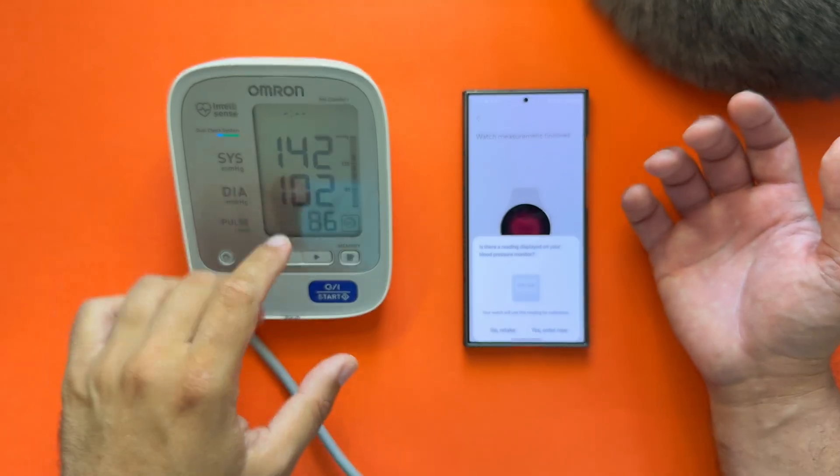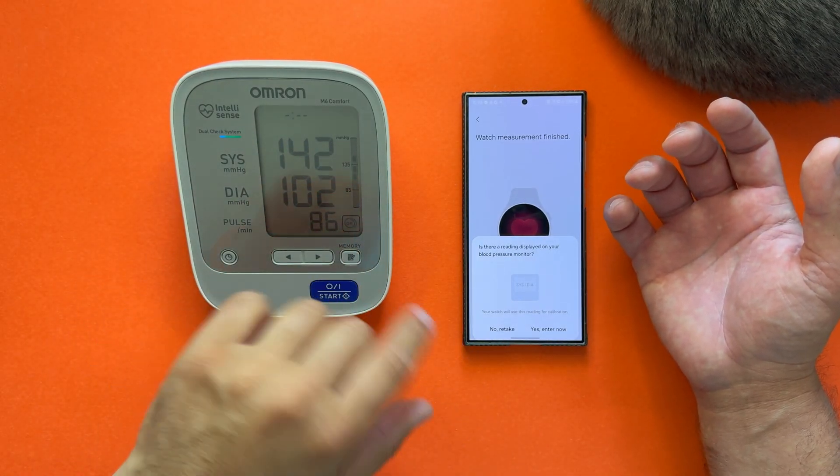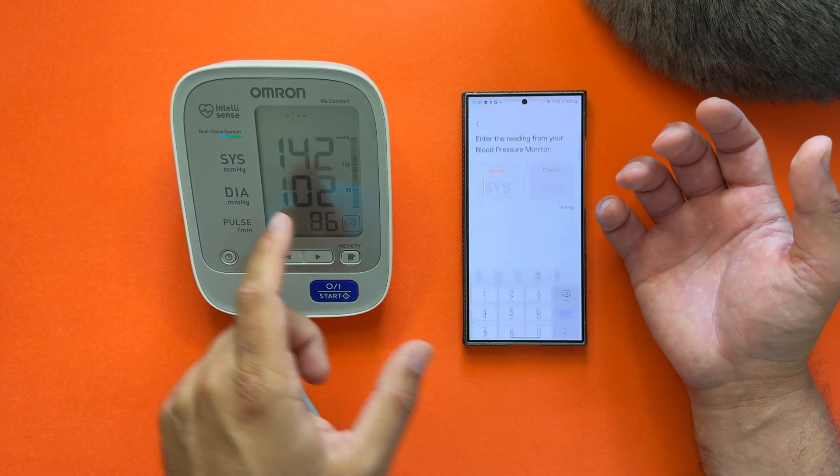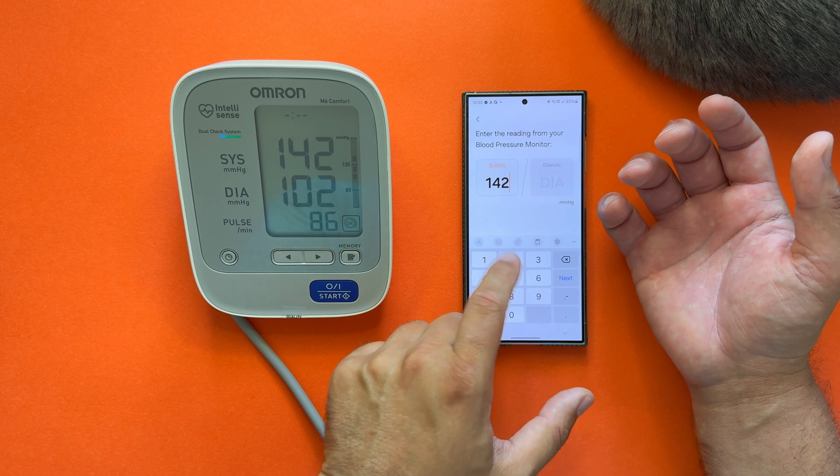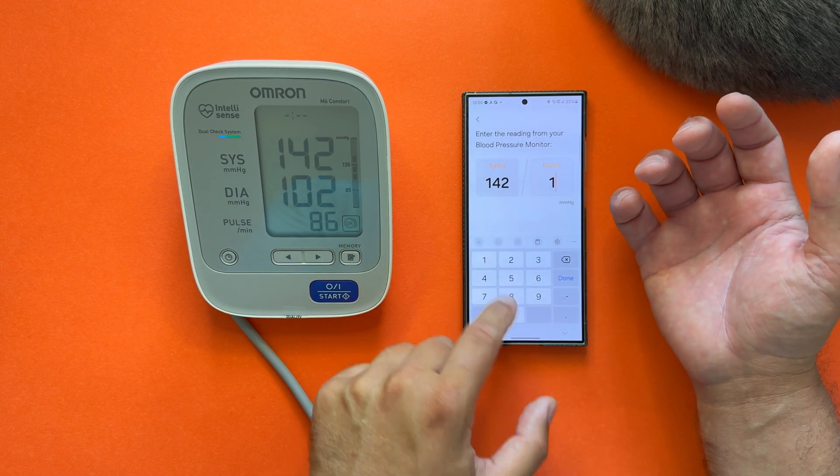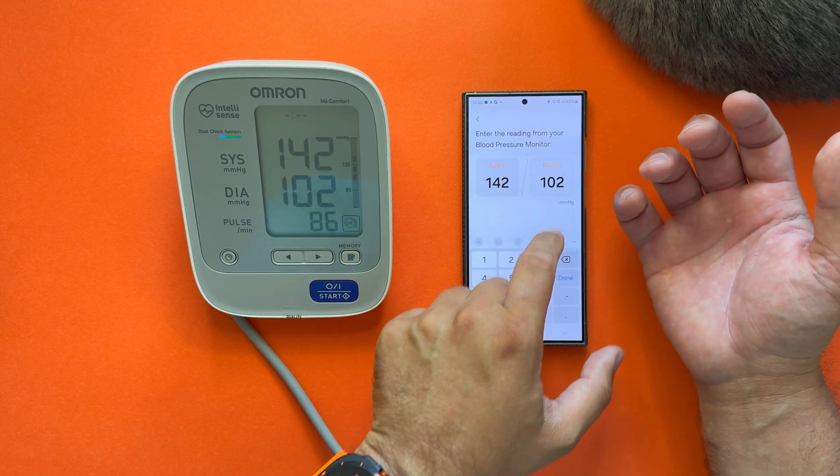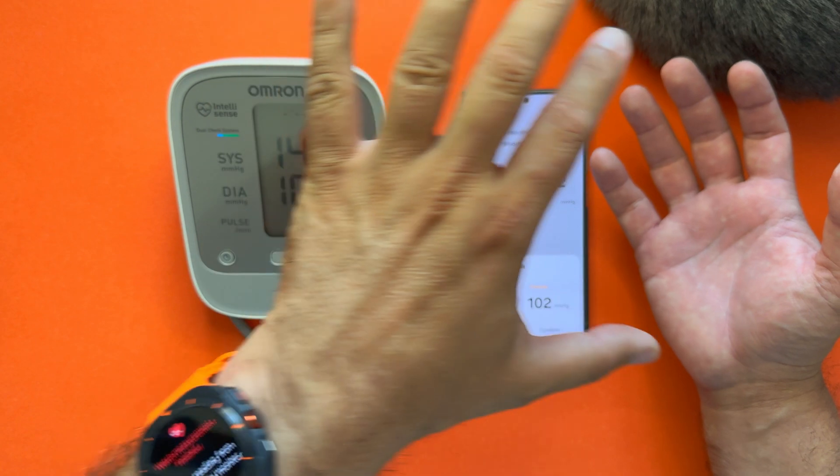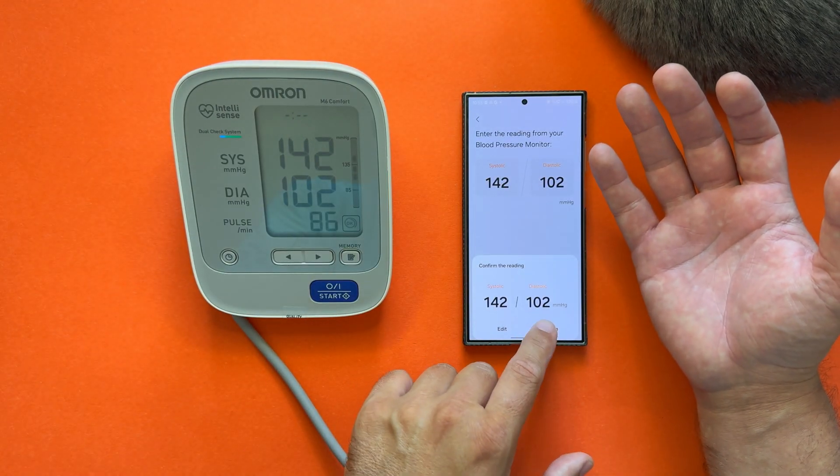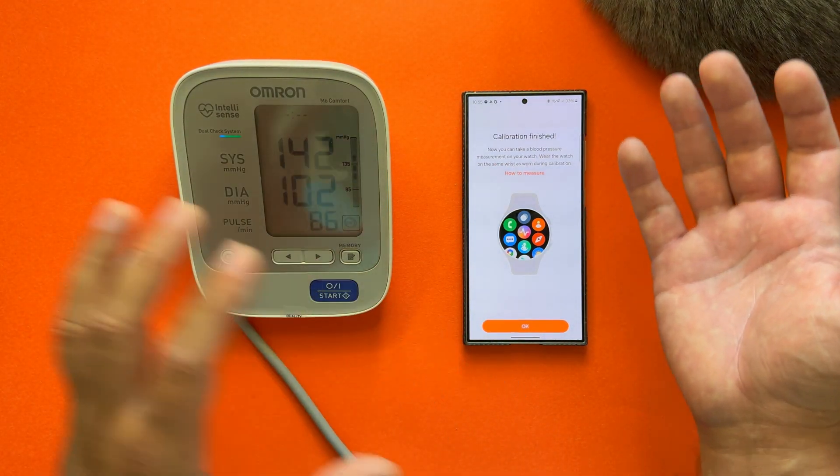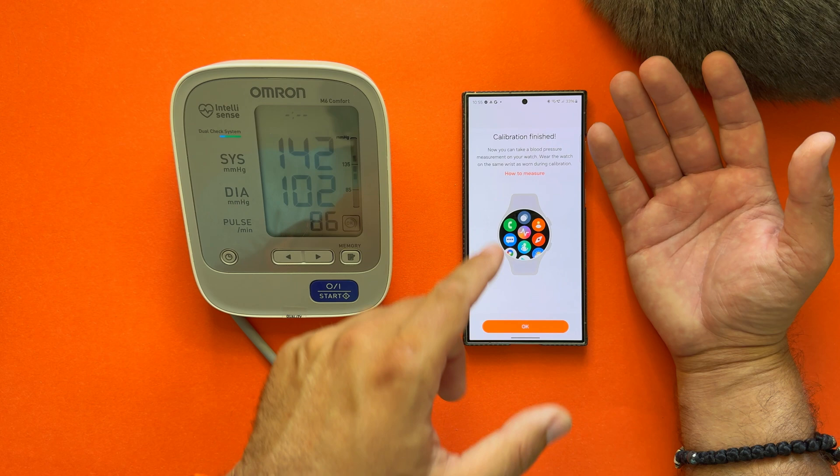All right, and now we're done. 142 over 102 with 86 pulse. I will now enter these numbers: 142 for the systolic and 102 for the diastolic. It's very important when you take those measurements not to move or speak. I'm going to press Confirm now, and now the calibration is finished.